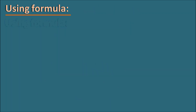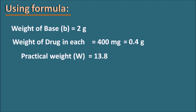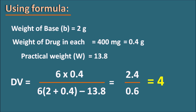Applying the formula for Example 1: b = 2g, d = 400 mg = 0.4g, w = 13.8g, n = 6. Displacement Value = (6 × 0.4) ÷ (6 × 2 + 0.4 − 13.8) = 2.4 ÷ 0.6 = 4. We can easily calculate the displacement value using the formula n × d ÷ (n × b + d − w).